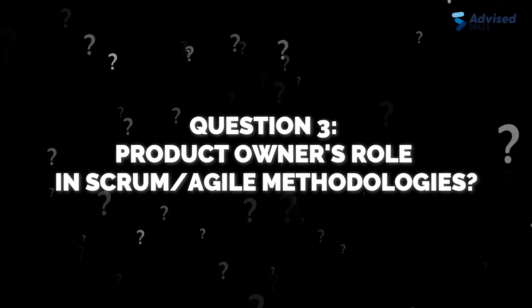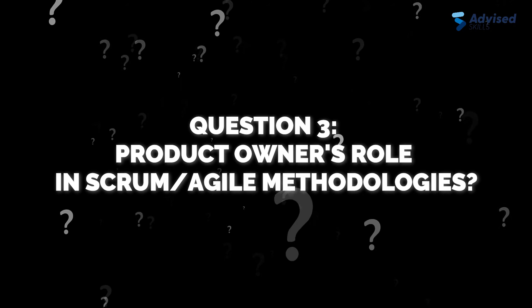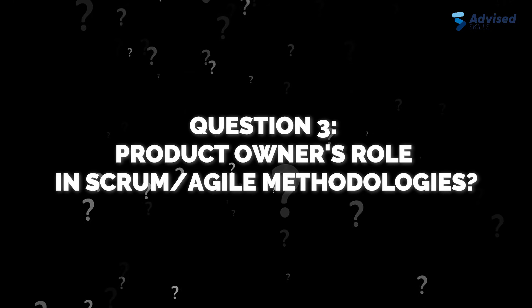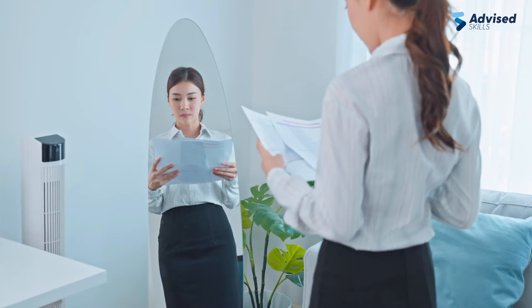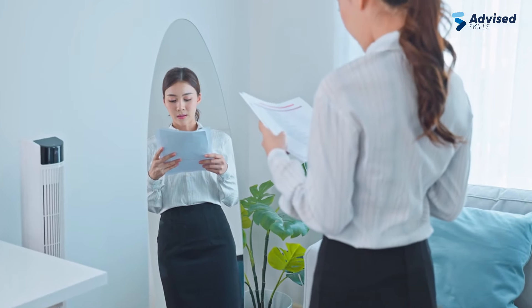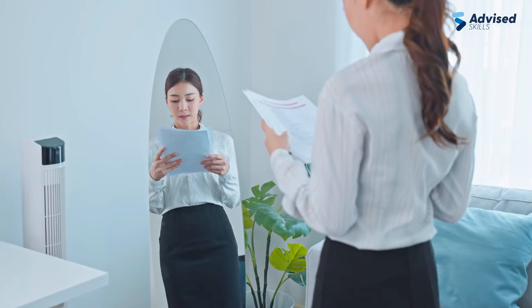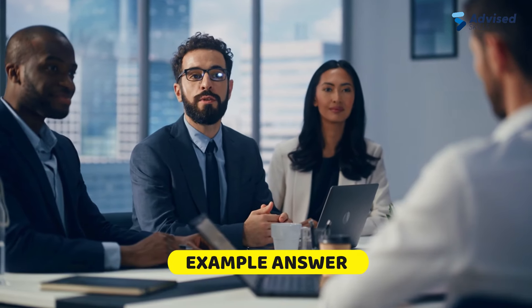Question 3: What is the product owner's role in Scrum and Agile methodologies? Your answer should highlight your knowledge of Agile practices and your role within them. Example answer: voice of the customer, grooming the product backlog, defining user stories, and playing a key part in sprint planning.